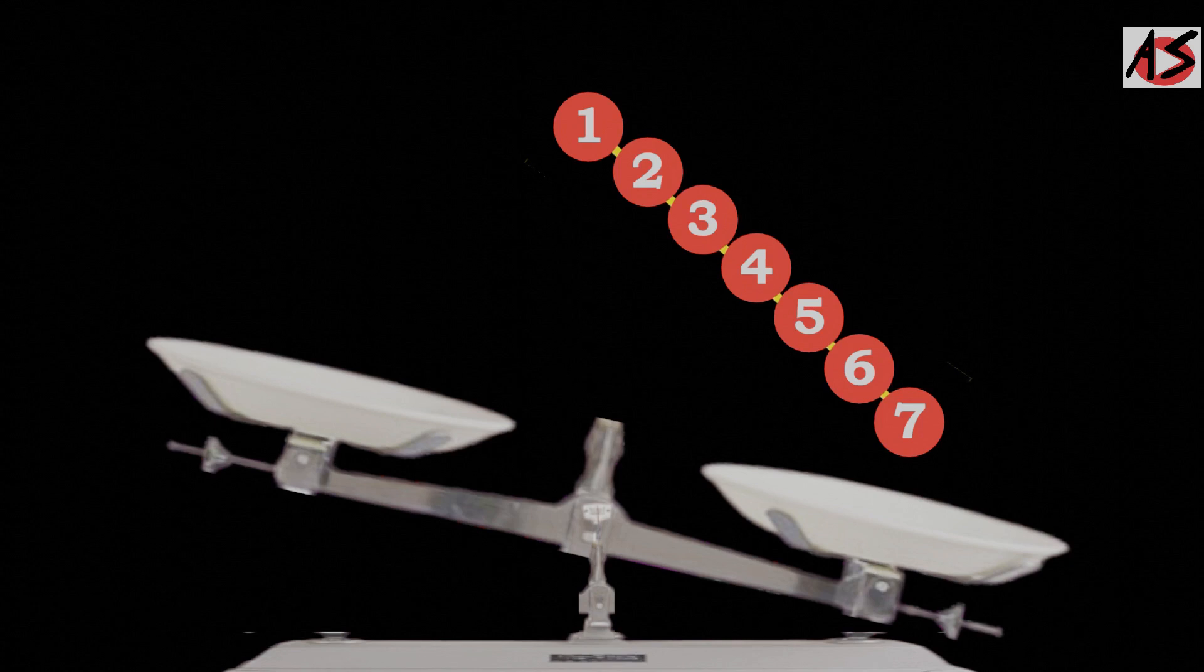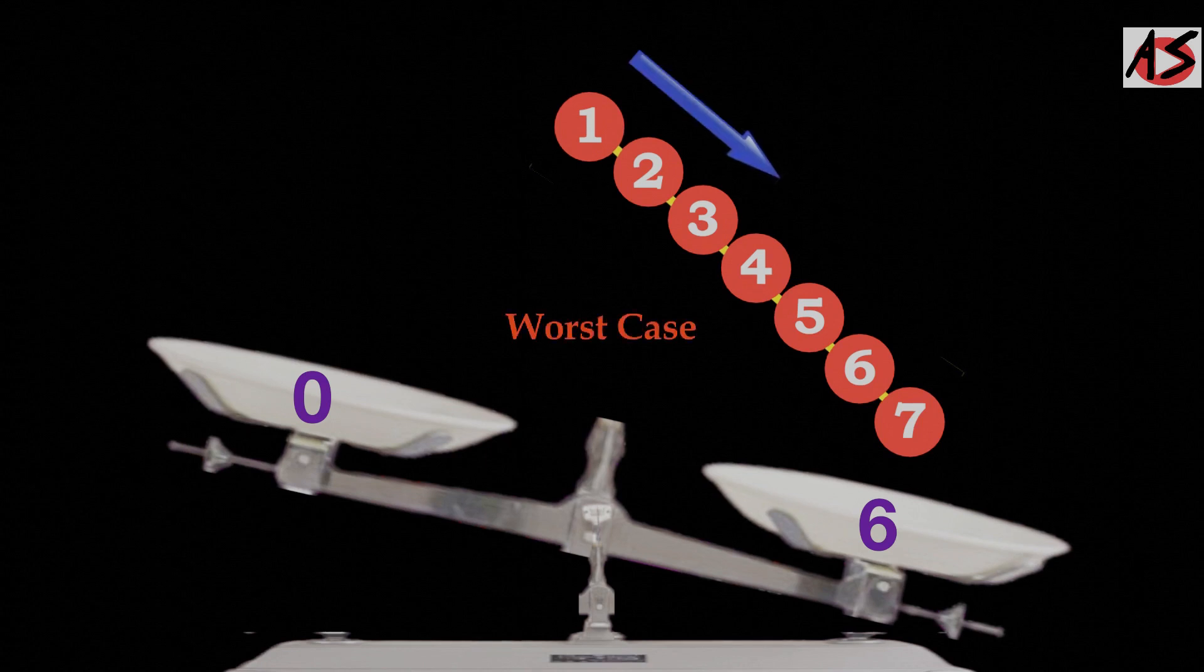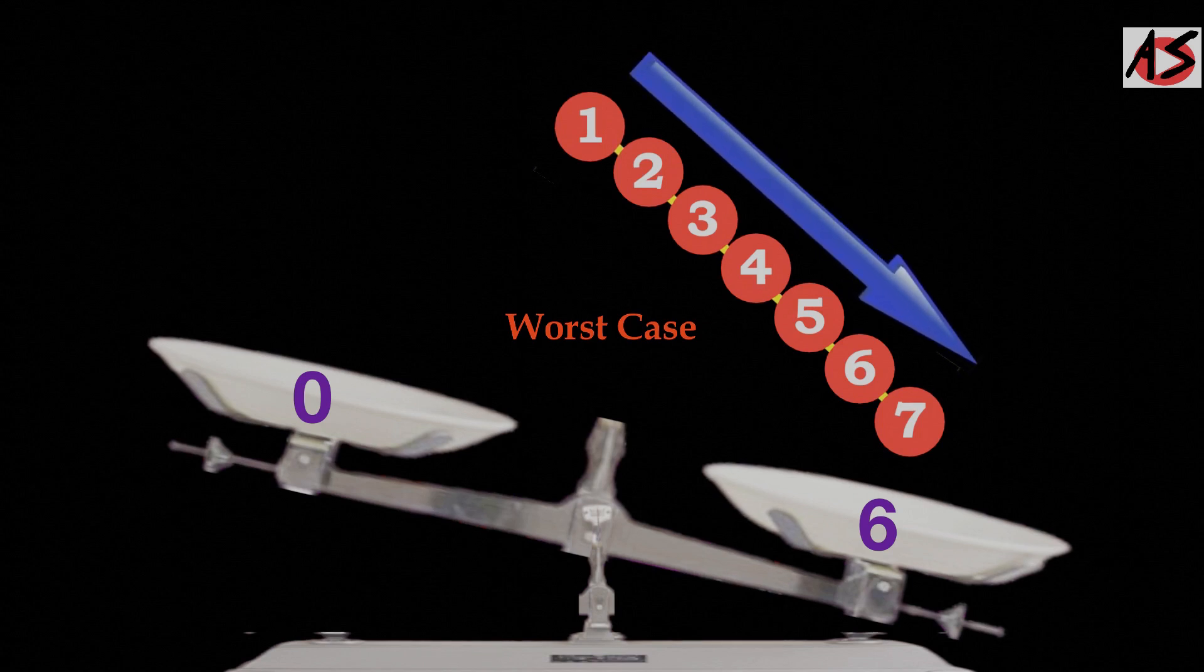At the left of the root you have 0 nodes and right of the root you have 6 nodes. So in the worst case, for any operation like insertion, search or deletion, you have to go through all n nodes.